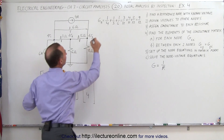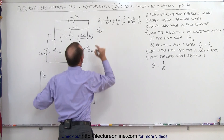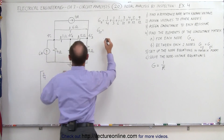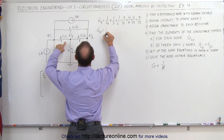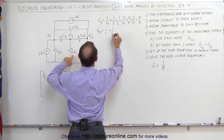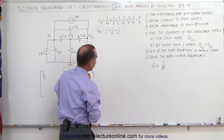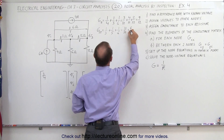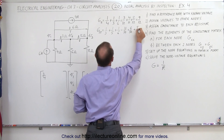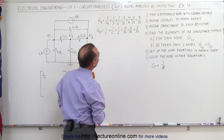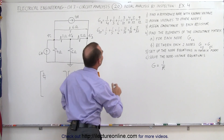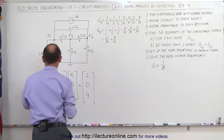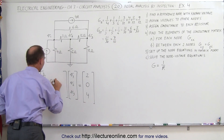G22 is the sum of all conductances directly connected to the second node. There are three resistors, so there will be three conductances: one over three, plus one over five, plus one over six. The common denominator is thirty, giving ten over thirty, plus six over thirty, plus five over thirty. Together that is twenty-one over thirty, or seven over ten. So the second diagonal element is 0.7, seven tenths.